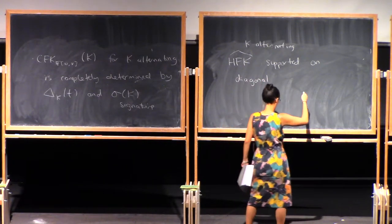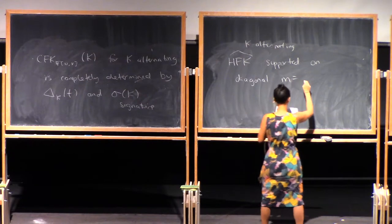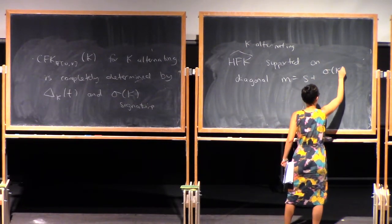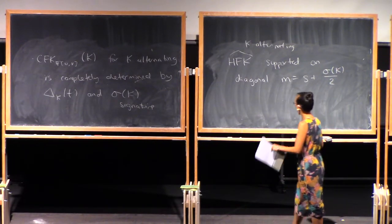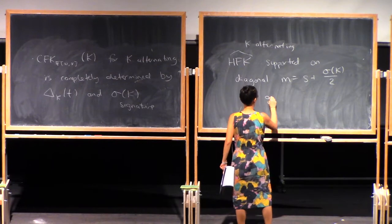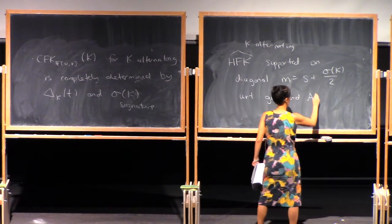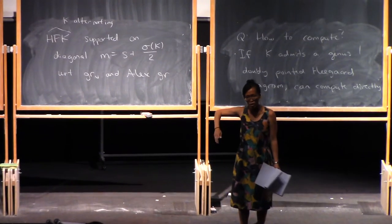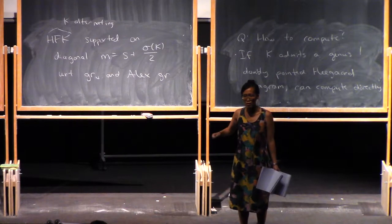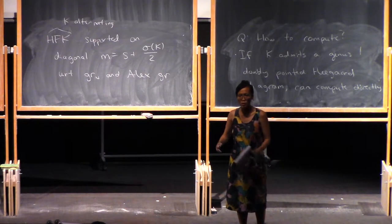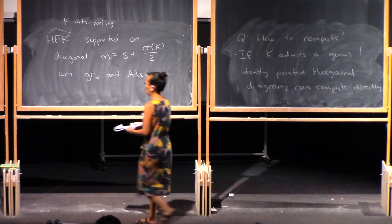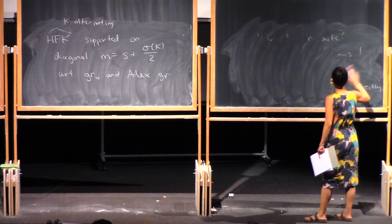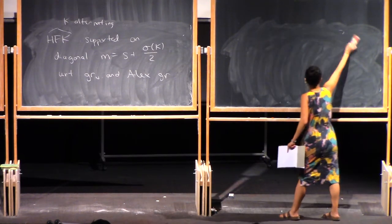HFK-hat is a bi-graded vector space whose graded Euler characteristic is the Alexander polynomial. It turns out that for K alternating, HFK-hat is supported on the diagonal m = s + σ(K)/2, with respect to the Maslov grading and Alexander grading. If you know it's supported on a single diagonal and you know its graded Euler characteristic, that actually entirely determines the graded vector space.